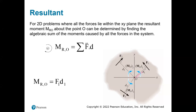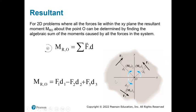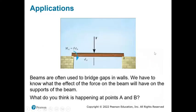Continuing the resultant moment example: F1 at distance D1 rotates counterclockwise — positive. F2 pushed alone rotates clockwise — negative. F3 released alone rotates counterclockwise — positive. The resultant is the algebraic sum of all these individual moments.